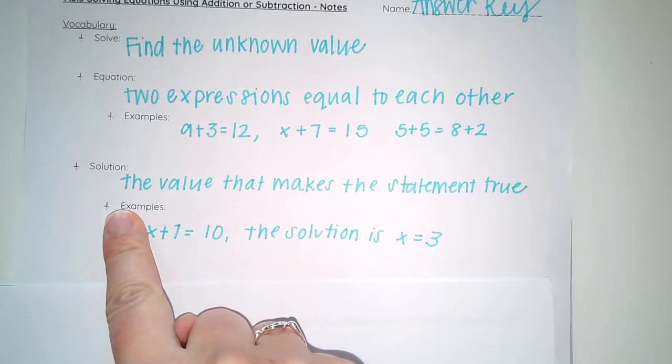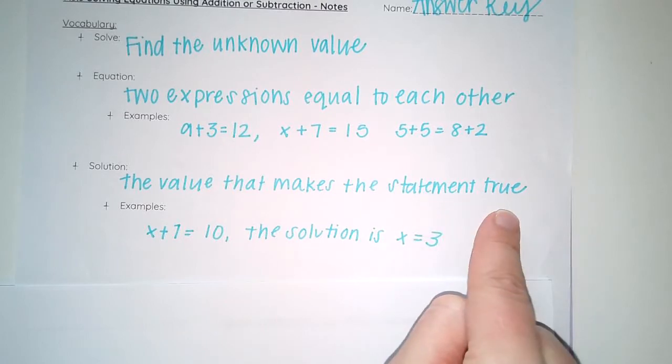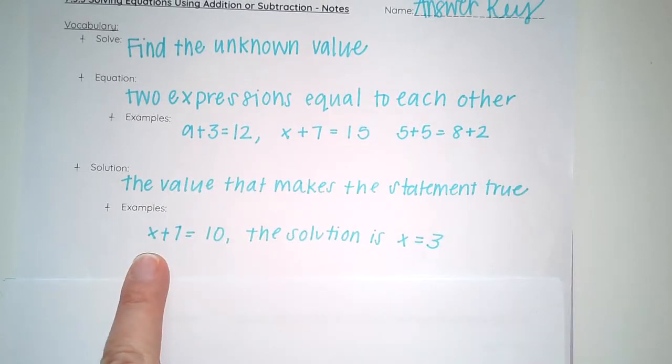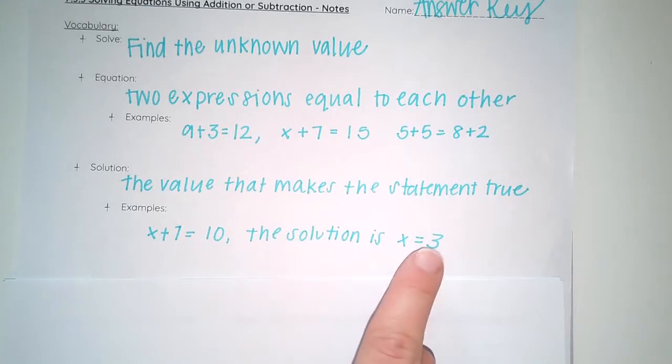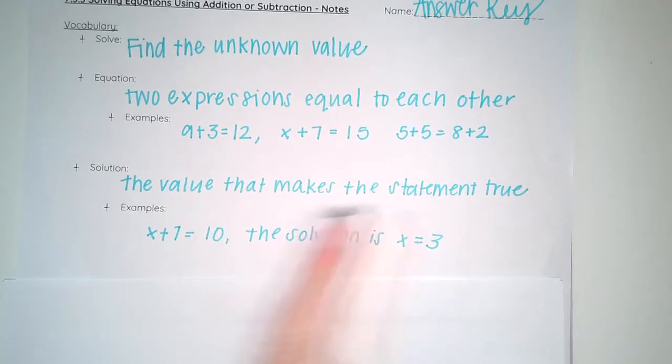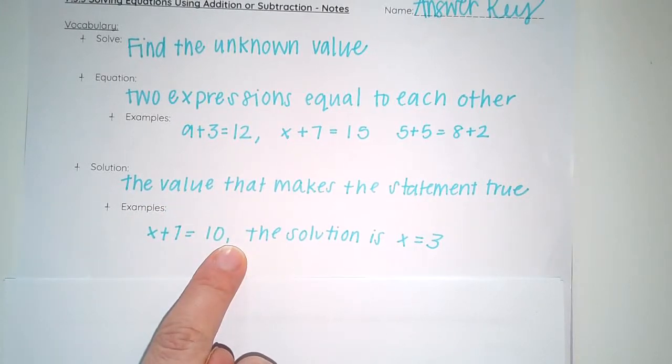Then we have the word solution, and that is the value that makes the statement true. So for example, where we have x+7=10, the solution is x=3, because x equals 3. If 3 is equal to x, then that would make this equation true.